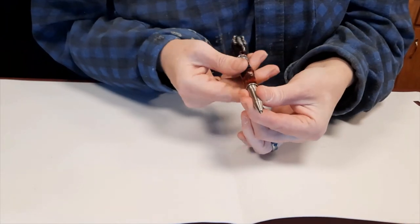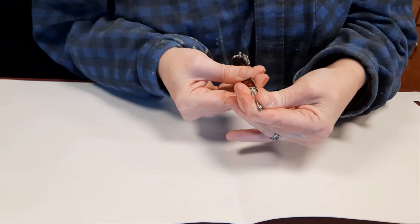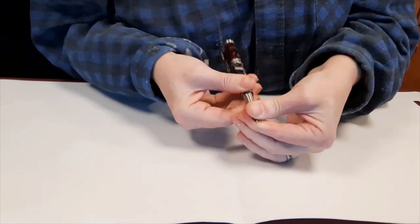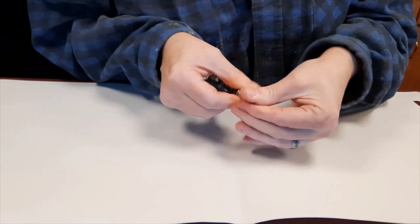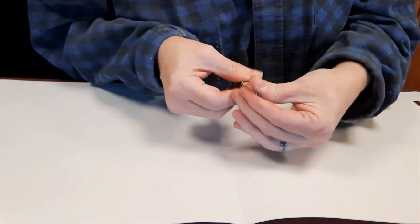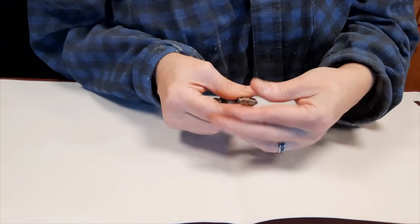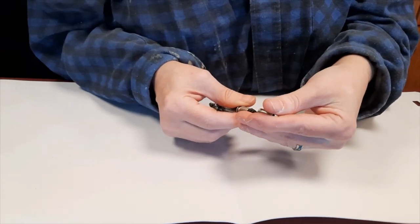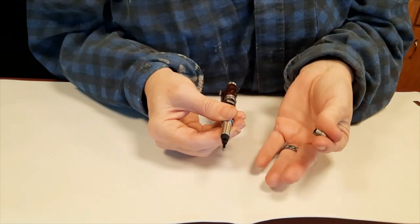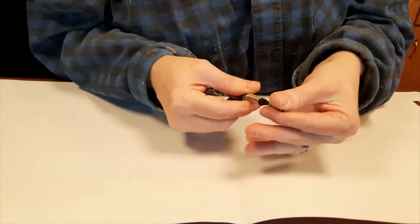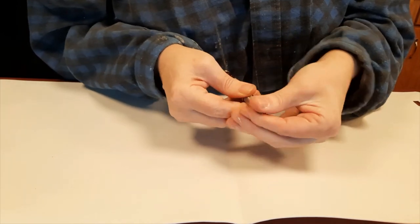This is, again, a rollerball pen. To change your ink, the tip itself will unscrew. There is a spring on this, so you want to be careful not to lose your spring, because you need your spring. That just pulls out, and you put your new refill in, and then screw your tip back on.